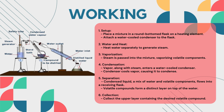The vaporized components along with the steam enter the water-cooled condenser, where the condenser cools the vapor causing it to condense back into liquid. The condensed liquid — a mixture of water and volatile components — flows into the receiving flask. Since the volatile compounds are immiscible with water, they form a distinct layer on top of the water, giving us a liquid-liquid separation. The upper layer containing the desired volatile compounds is collected separately — this is the essential oil or volatile compound of interest. In summary, steam distillation utilizes steam to vaporize and extract volatile compounds from a mixture, offering a gentle method for isolating heat-sensitive substances like essential oils.